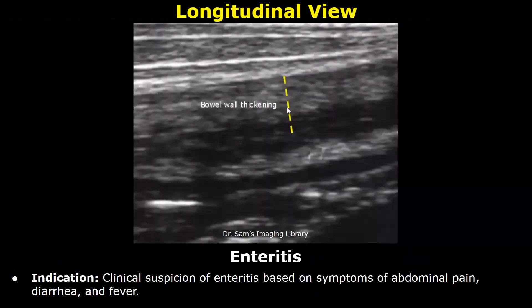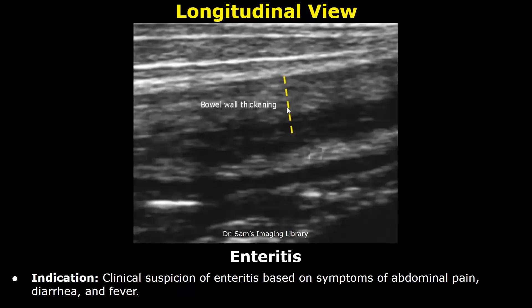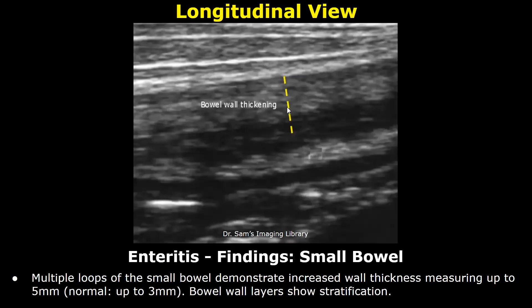This is a case of enteritis. Clinical indications are clinical suspicion of enteritis based on symptoms of abdominal pain, diarrhea, and fever. Findings: multiple loops of the small bowel demonstrate increased wall thickness measuring up to 5 millimeters. The normal range is up to 3 millimeters.